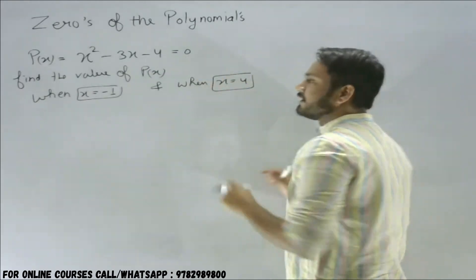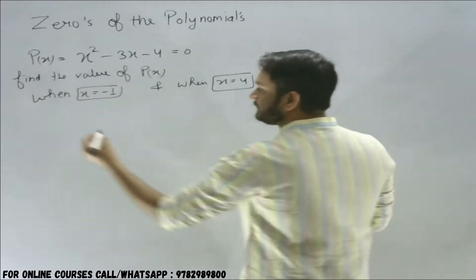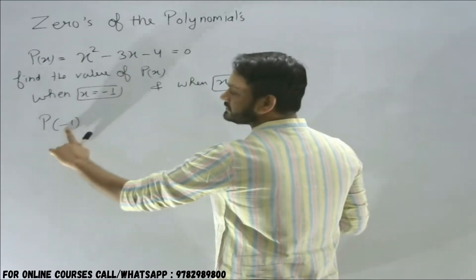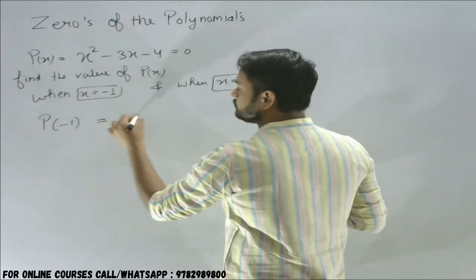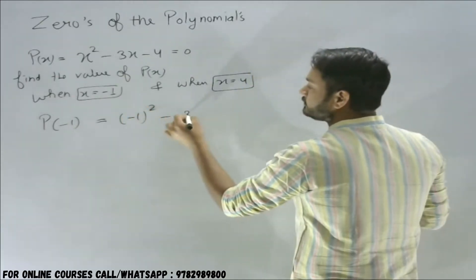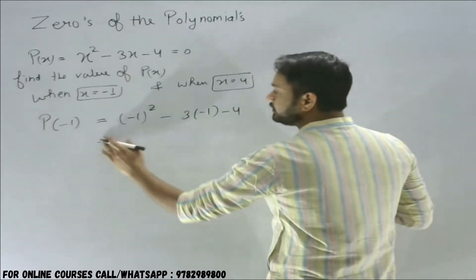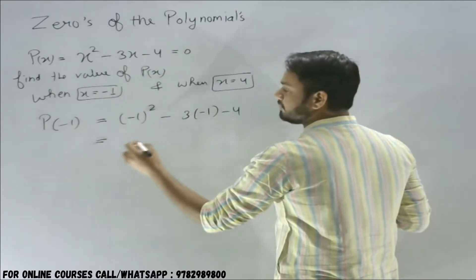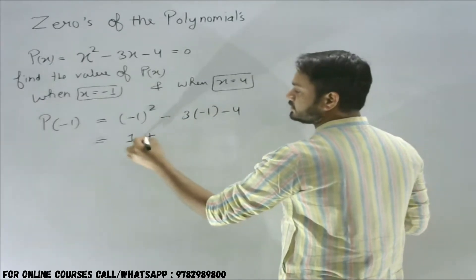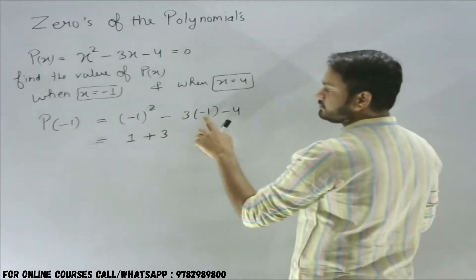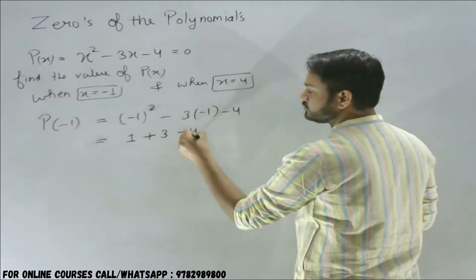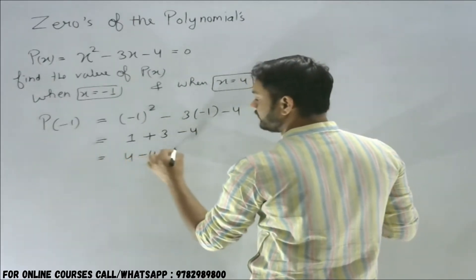In both values, we need to find the value of p(x). Let's substitute x equals minus 1. So p(minus 1): we substitute minus 1 into the whole expression. It will be minus 1 whole squared, minus 3 into minus 1, minus 4. Square of minus 1 is 1, then 3 into minus 1 is minus 3, and minus times minus is plus, so this becomes plus 3, then minus 4. Finally, we get 1 plus 3 minus 4, which equals 0.